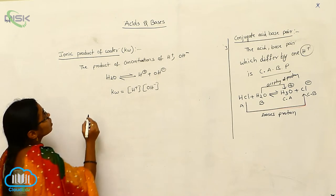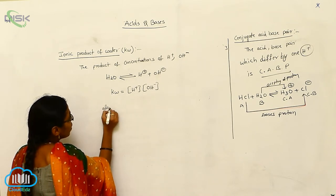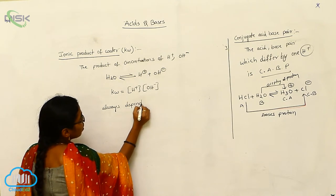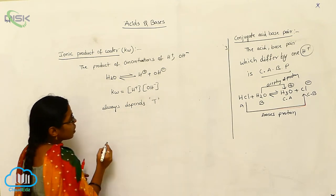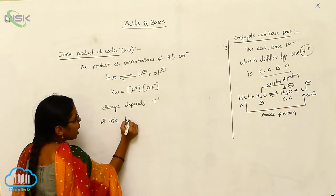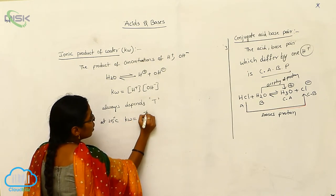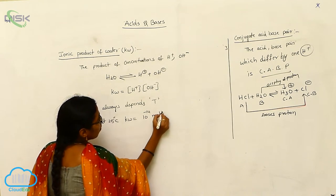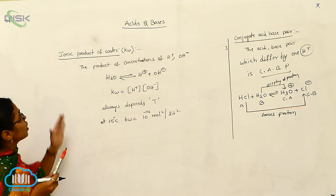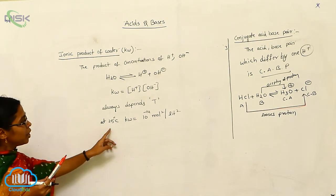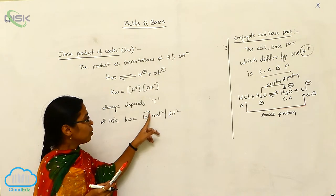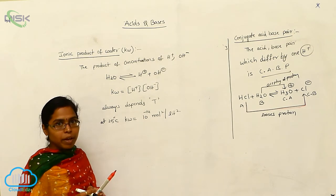The ionic product of water always depends upon temperature. At 25°C, the value of Kw is 10⁻¹⁴ mol² per liter².